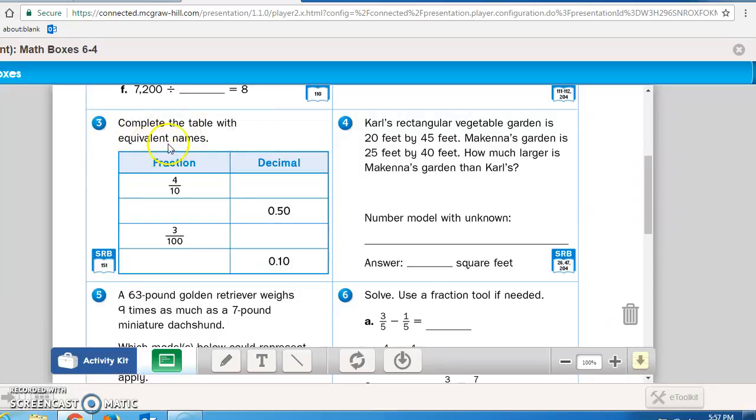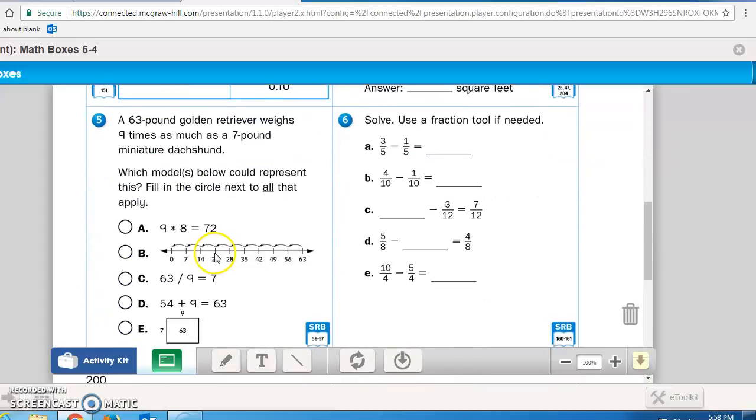Math box 3 says, complete the table with equivalent names. Math box 4, so 4 tenths, you need to write it as a decimal. 50 hundredths, you need to write it as a decimal. 3 hundredths, again, write it as a decimal. And 10 hundredths, write it as a fraction. Sorry, it needs to be a fraction in this column, decimal in this one. Pause the recording now and do math box 3. Math box 4, Carl's rectangular vegetable garden is 20 feet by 45 feet. McKenna's garden is 25 feet by 40 feet. How much larger is McKenna's garden than Carl's? Make sure you label Carl's K and put what you're multiplying to figure out your area. And then McKenna's M, multiply that out and find out your answer for this problem. Pause the recording now and then turn it back on when you're ready to hear problem 5 read to you. A 63 pound golden retriever weighs nine times as much as a 7 pound miniature Dachshund. Which model below could represent this? Fill in the circle next to you.